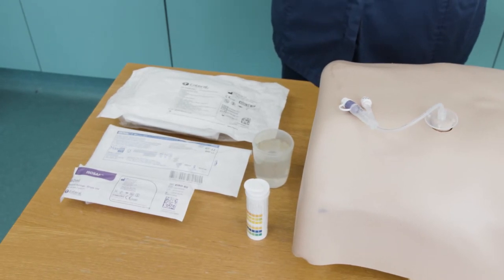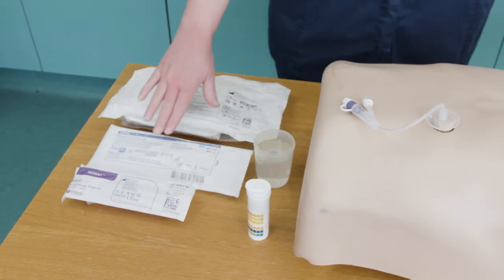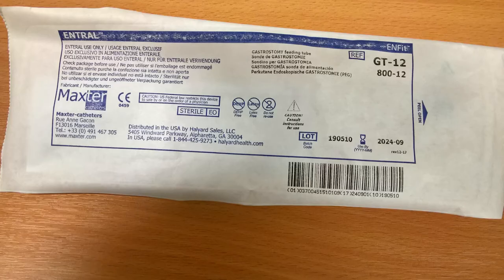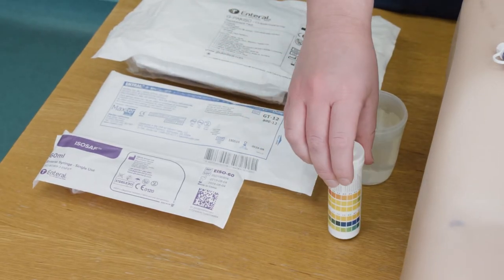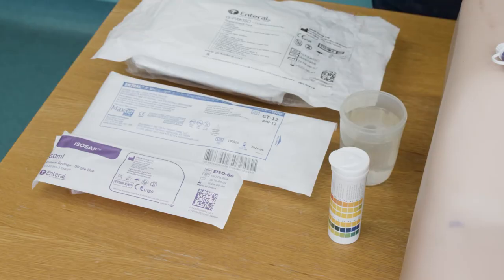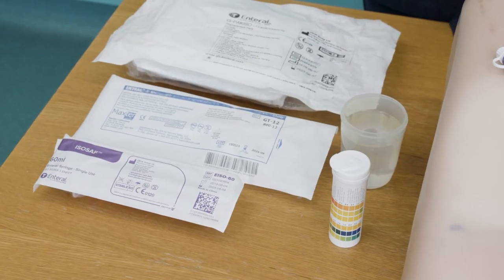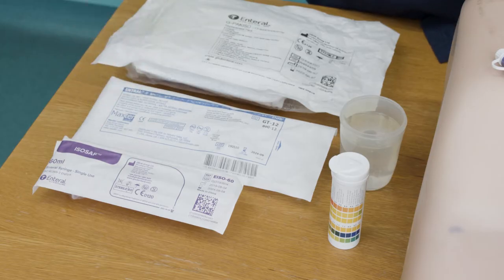The equipment you will be using: an appropriate replacement tube, CE marked pH paper, water for flushing the tube, and a 60ml enteral Enfit syringe.